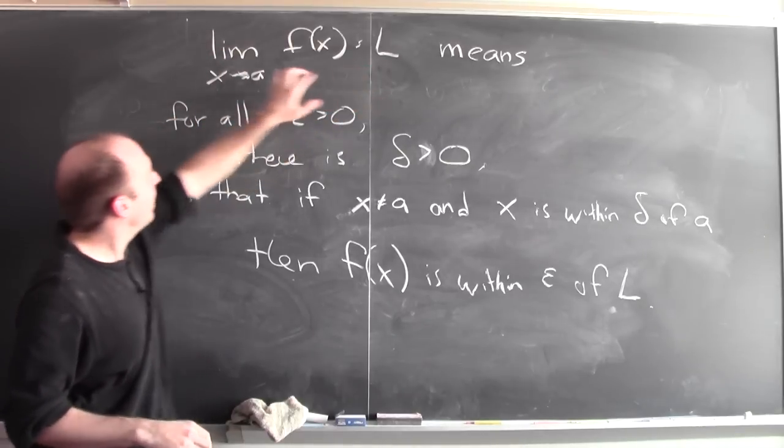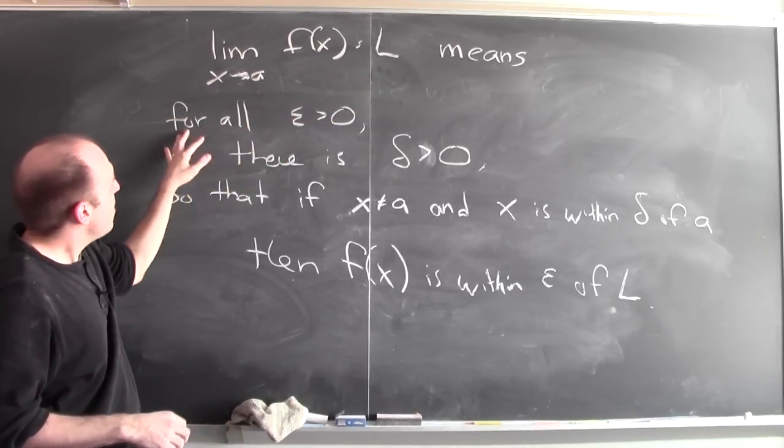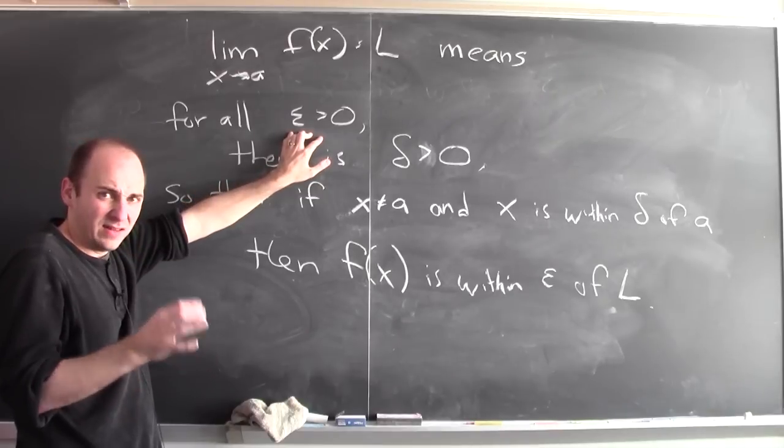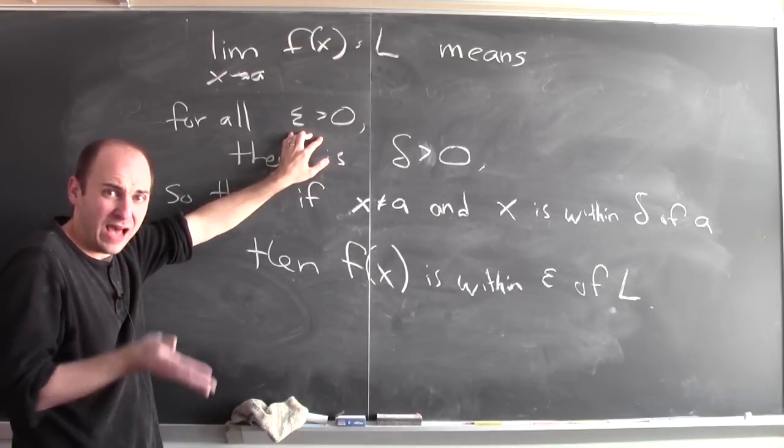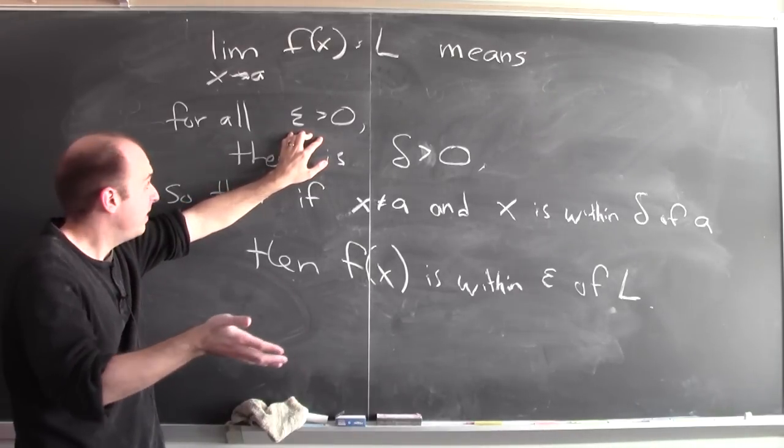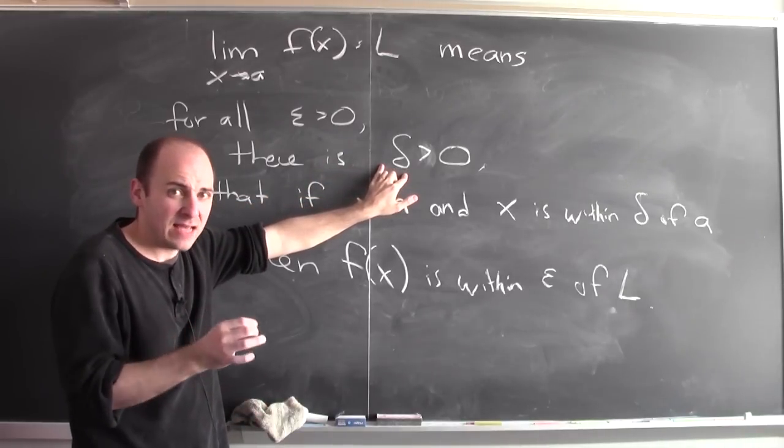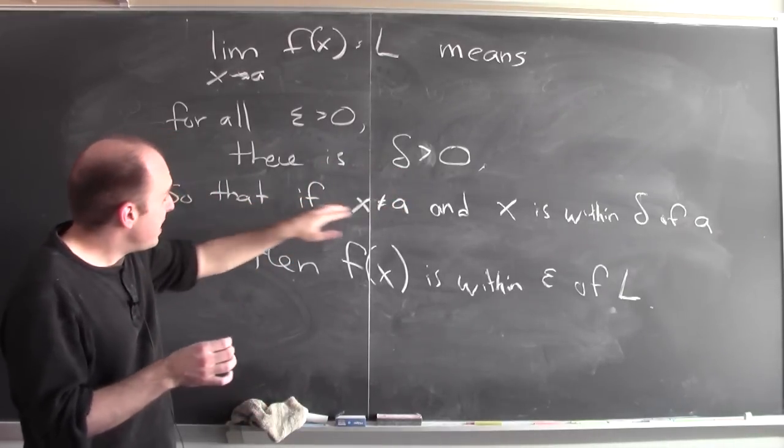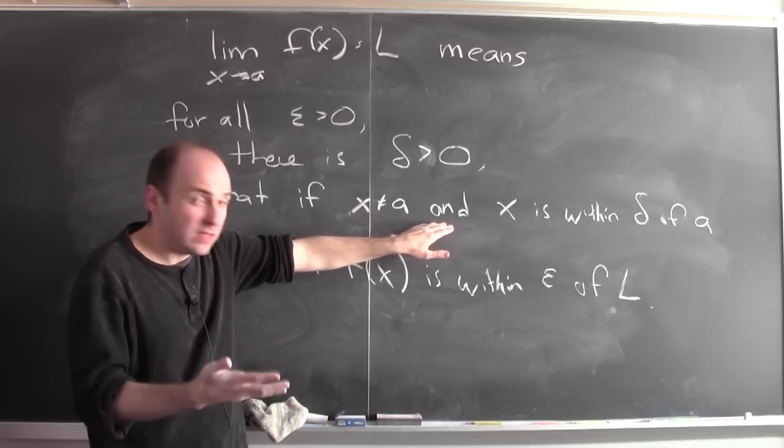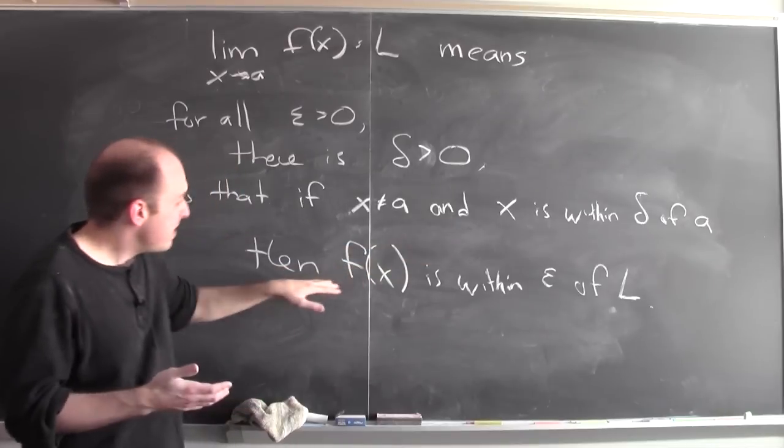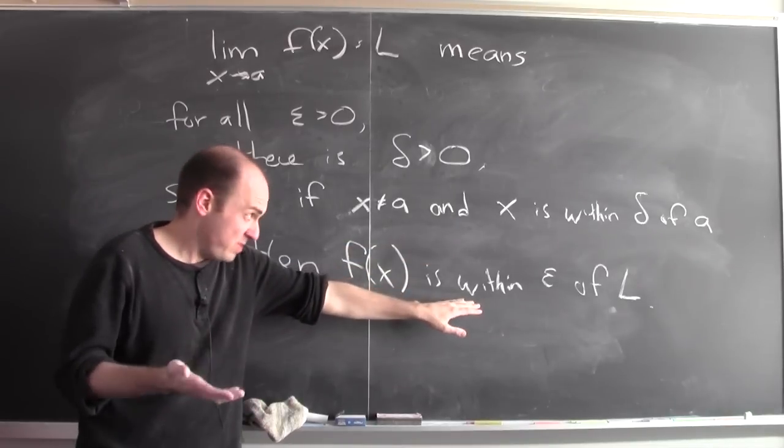To say that the limit of f of x equals L as x approaches a means that for all numbers epsilon, epsilon is measuring how close I want f of x to L. Then there's some corresponding number delta, which is how close x has to be to a. So that whenever x is that close, delta within delta of a, then f of x is really within epsilon of L.